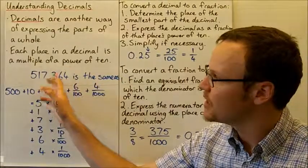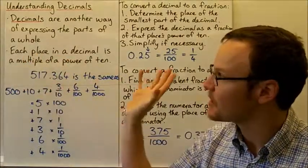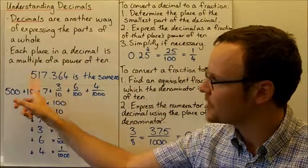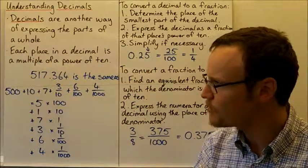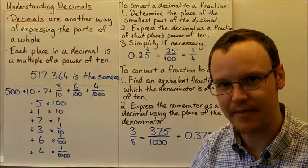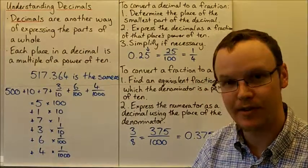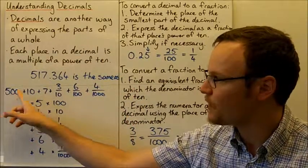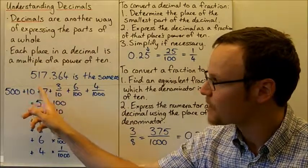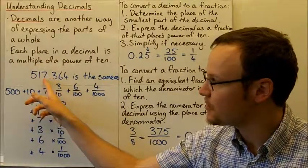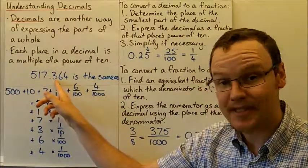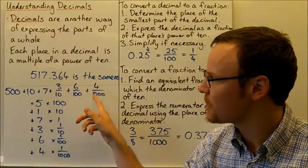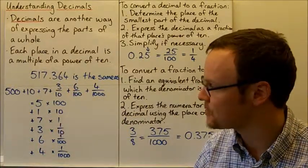Each place is a multiple of a power of 10. So this number here, 517.364, is the same as 500 plus 10 plus 7 plus three-tenths plus six-hundredths plus four-thousandths.